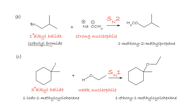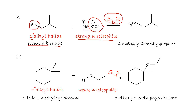Isobutyl bromide is a primary alkyl halide, and sodium ethoxide is a strong nucleophile. Primary substrate plus strong nucleophile gives SN2. Take the Br out and insert the nucleophile to give the ether product.